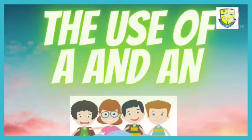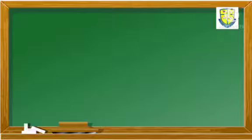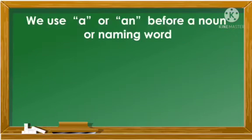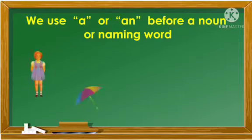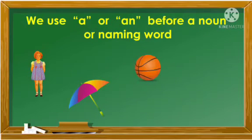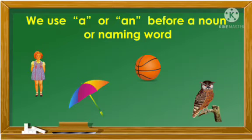Good day, students! We are here to study about the use of 'a' and 'an.' Today let us learn about the use of 'a' and 'an.' We use 'a' or 'an' before a noun or naming word. For example: a girl, an umbrella, a ball, an owl, a tree.